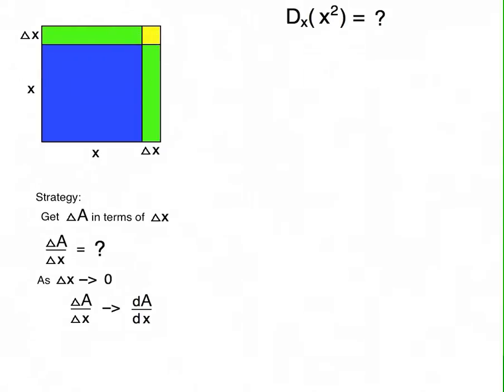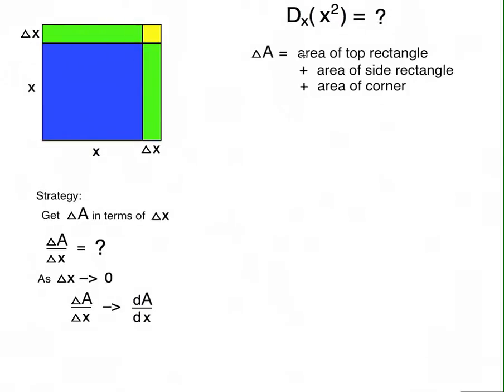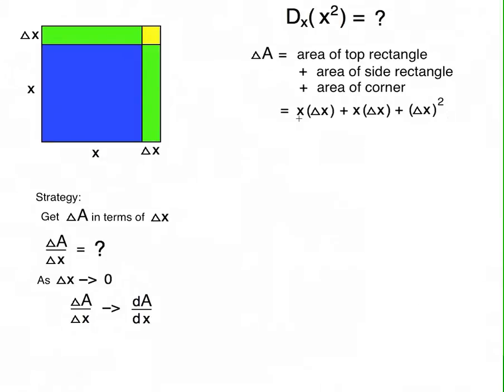So we've got these three rectangles all together make up the change in the area. So we can write down that the change in the area is equal to the area of the top rectangle, plus the area of the side rectangle, plus the area of the corner. And how much is that? Well, we just said the two green ones are each x times delta x. The yellow one is delta x times delta x, or delta x squared.